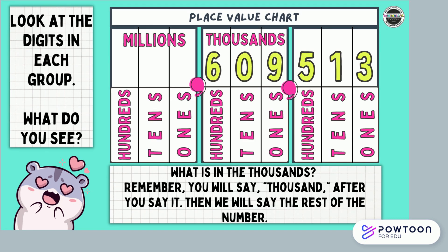Look at the digits in each group — what do you see? What is in the thousands? Remember, you will say thousand after you say it, then say the rest of the number. Try it on your own. Did you say 609,513?